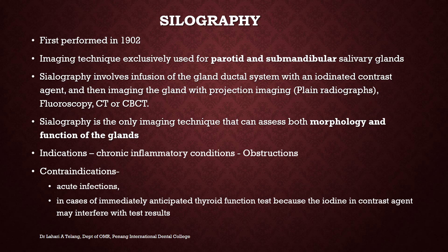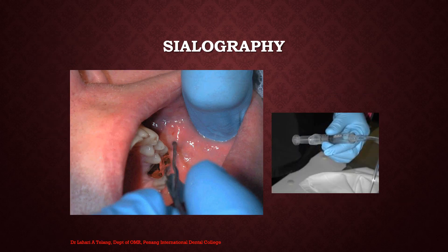Sialography is a procedure first performed in 1902 and is an imaging technique exclusively used for the parotid and submandibular salivary glands. It involves infusion of the gland ductal system with an iodinated contrast agent and then imaging with plain radiographs, fluoroscopy, CT or CBCT. Sialography is the only imaging technique that can assess both morphology and function of the glands simultaneously. Indications include chronic inflammatory conditions and obstructions of the ductal system. Contraindications are acute infections or anticipated thyroid function tests, as iodine may interfere with results.